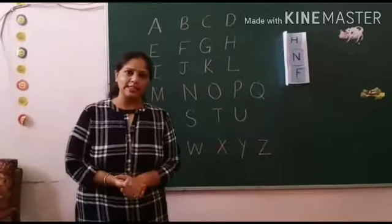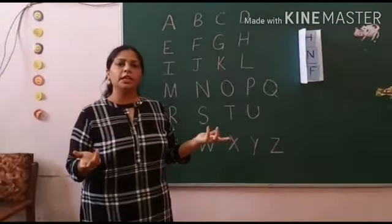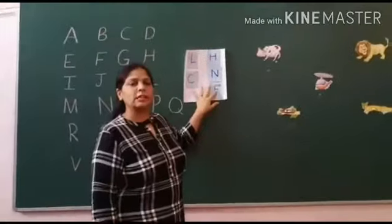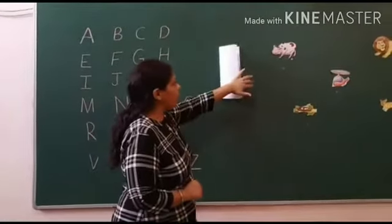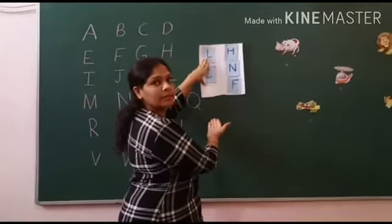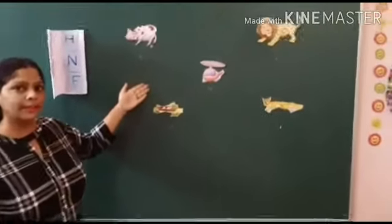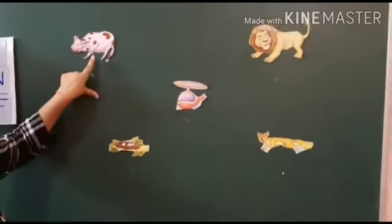Do you like this rhyme? Do you know babies, some letters become very naughty. They come out and play with their friends. They are not able to find their picture friend because they all are hidden here. Babies, you help the pictures to find their letters. OK, come on. OK, babies, tell me which picture is this.